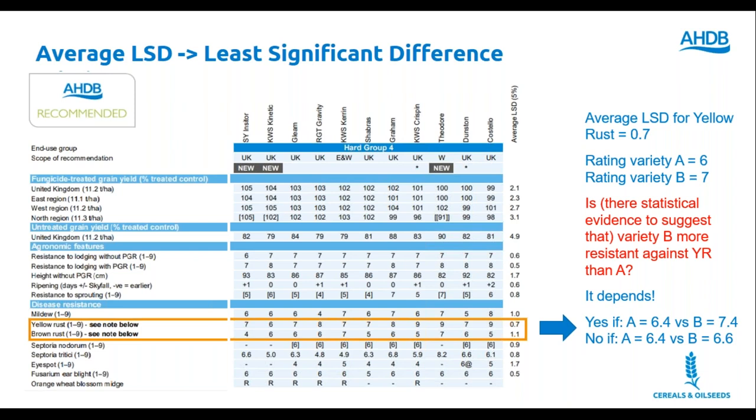It's reasonable to wonder if variety B must be better. The question is, is there enough statistical evidence to suggest that variety B is more resistant against yellow rust than variety A? And the answer is, it depends. This is something that may not be clear from the table because what we are doing here, as you can see, we are rounding the rating to the nearest whole number. If the actual value of yellow rust resistance rating for A is 6.4, whereas for B is 7.4, then the difference is 1.